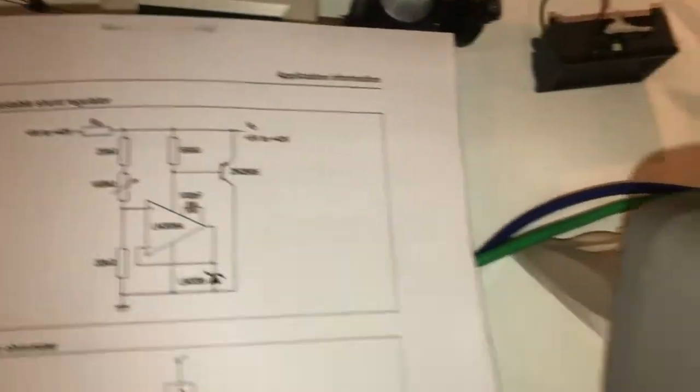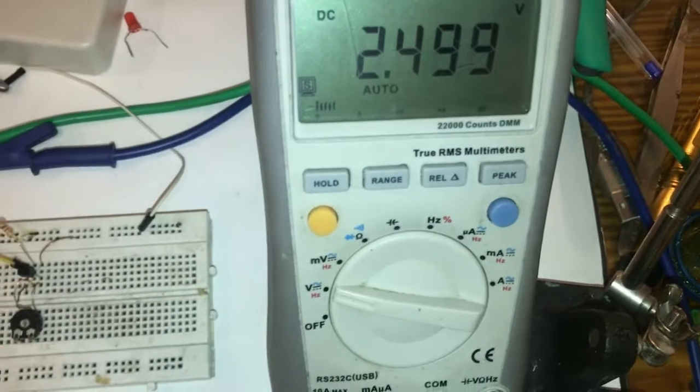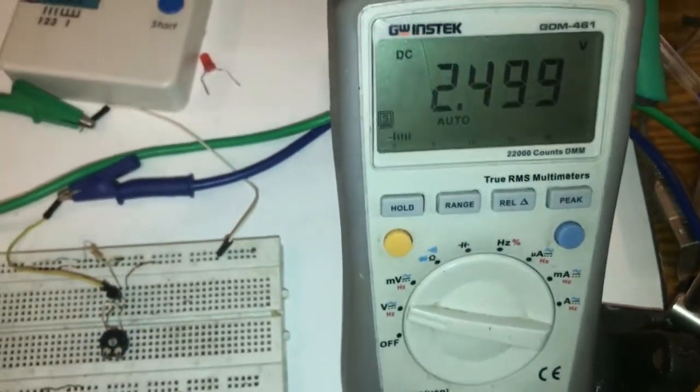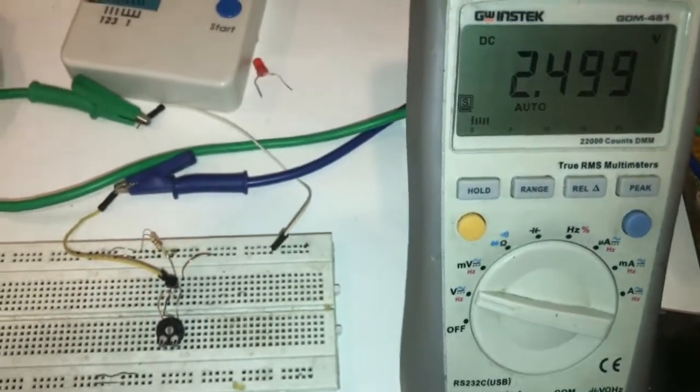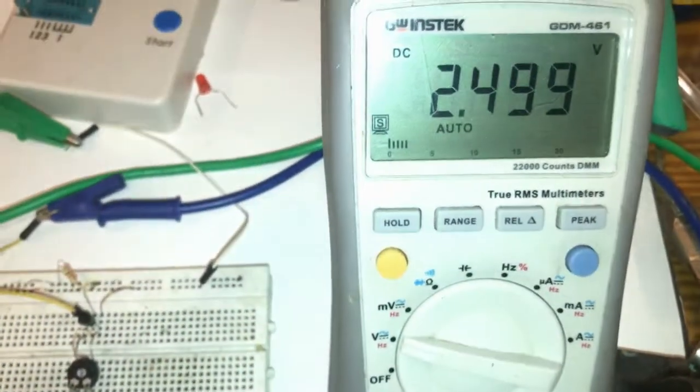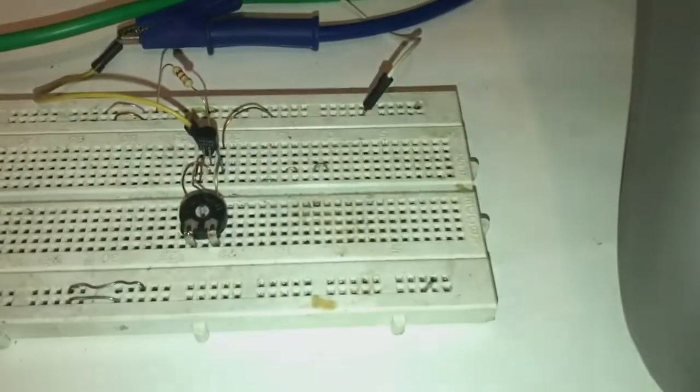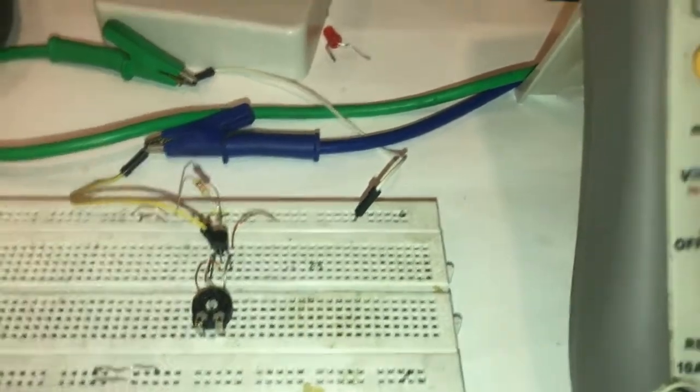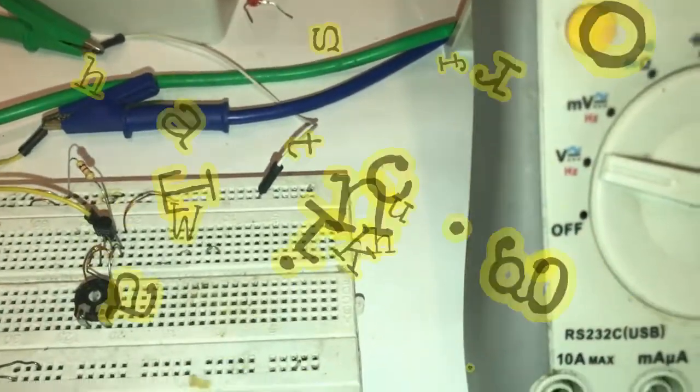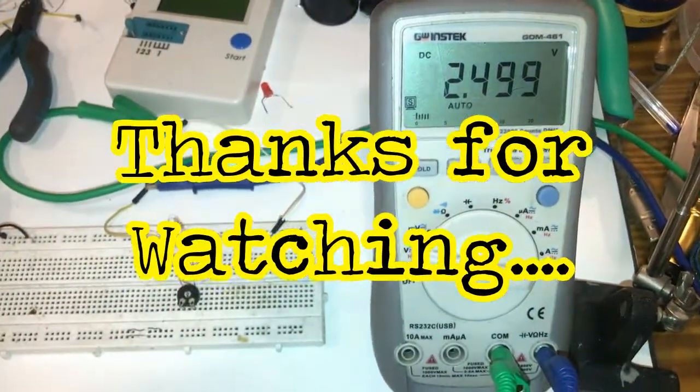Very good, thanks for watching. One more time, here is the project: 2.499, super stable. We don't have any change within five minutes talking over this video. So we've made it super simple, and no need for multi-turn. With the simple 22k pot, it's working pretty well. Thanks for watching, goodbye guys, bye bye.